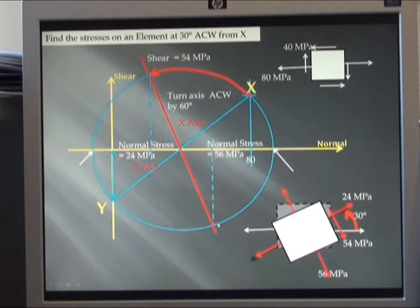And the other face of my element comes from the other side of the circle. Its normal stress is 56, tensile 56. And its shear will be negative 54 in here. Put the other arrows on, and done.